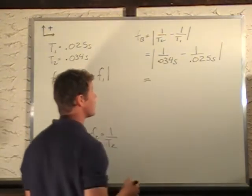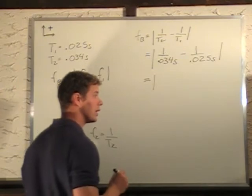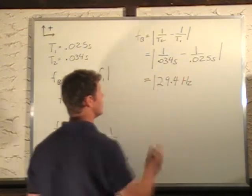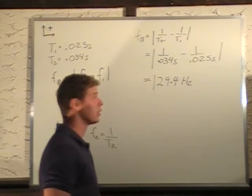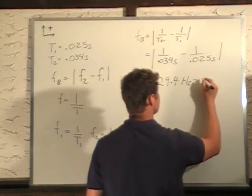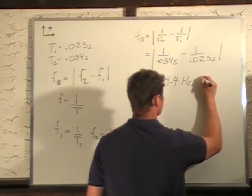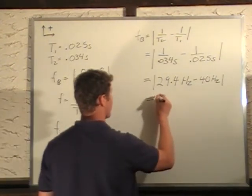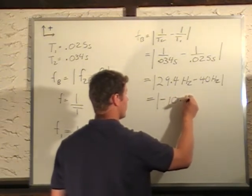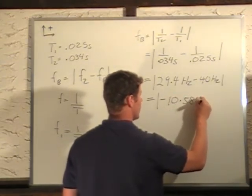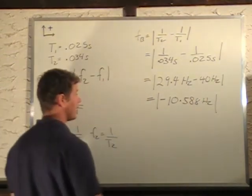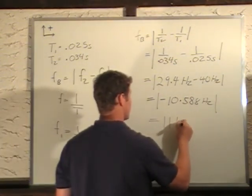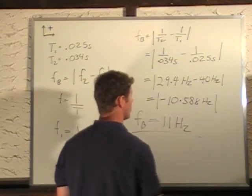Calculating these values: 1 over 0.034 gives 29.4 hertz, and 1 over 0.025 gives 40 hertz — since a hertz is just 1 over second. The difference is 29.4 minus 40, which is negative 10.588 hertz. The absolute value takes care of that negative sign, and rounding to two significant digits gives us 11 hertz. So the beat frequency is 11 hertz.